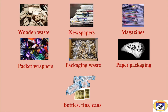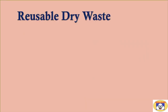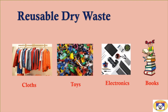Dry waste mainly includes wooden waste, newspapers, magazines, packet wrappers, packaging waste, paper packaging, bottles, tins, cans, etc. This type of waste needs to be recycled properly. The third type is reusable dry waste.